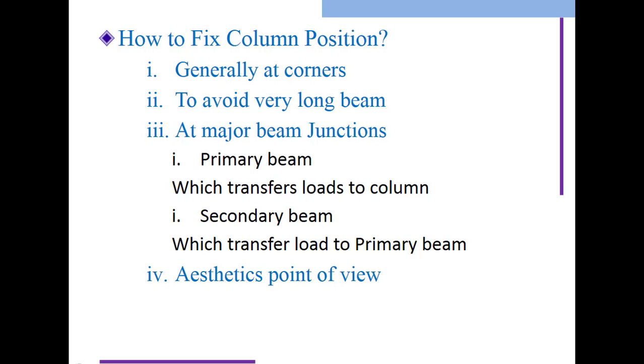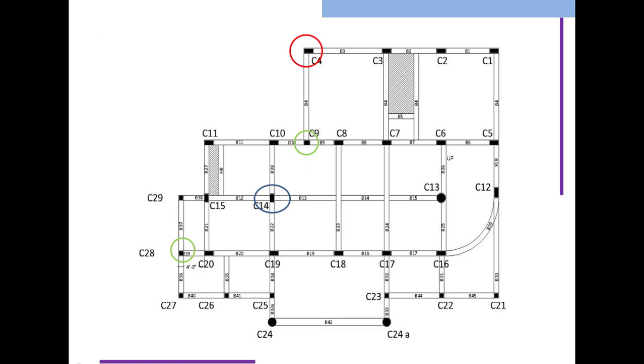If the client or architect wants to increase appearance and avoid many columns for aesthetic view, focus on strengthening or different materials. The third point is column position at major beam junctions - T beam junctions with secondary beams. Primary beams transfer load to columns, and secondary beams like cantilevers transfer load to primary beams. We also consider aesthetic point of view.